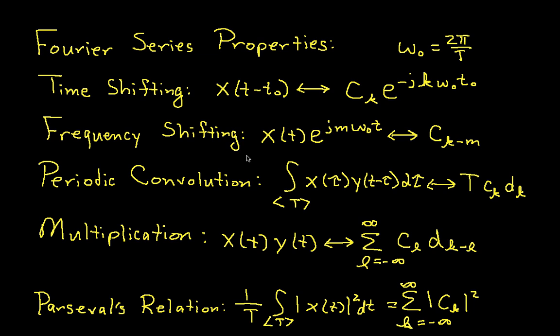Fourier series properties are very useful, as we will show in this video. They basically tell you that if a certain thing happens in the time domain, you can figure out what should happen to the Fourier series coefficients. I've listed a few of the most used Fourier series properties.